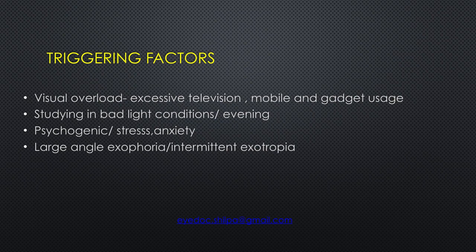Any episode of stress or anxiety can also trigger accommodative spasm. In intermittent exotropes, when they try to control their exotropia, it can produce accommodative spasm and intermittent blurring of vision.